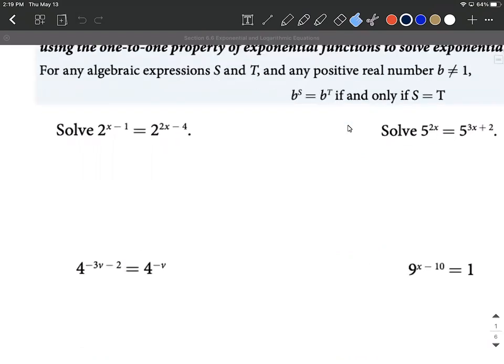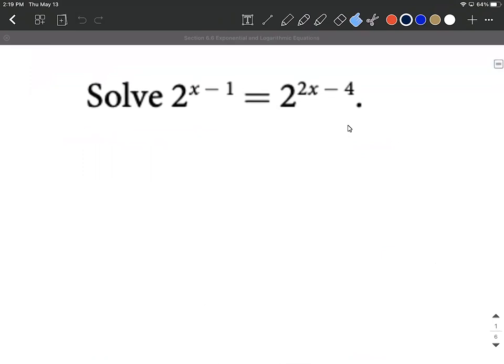So let's jump right into a few of these examples. On this first one we have 2 raised to the x minus 1 equals 2 raised to the 2x minus 4. Now this fits into that situation perfectly from the very beginning. Have the same base on both sides, they both have two as their common base.